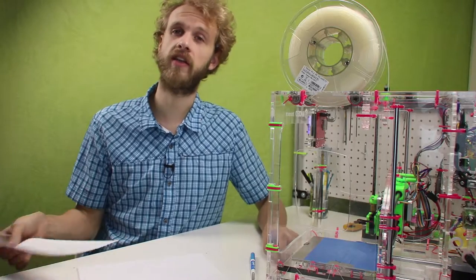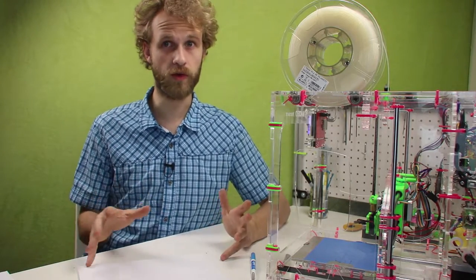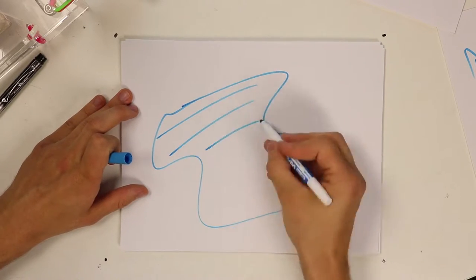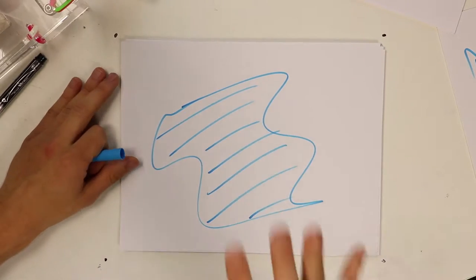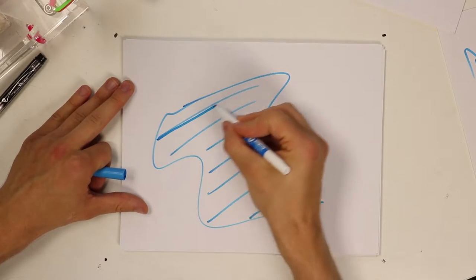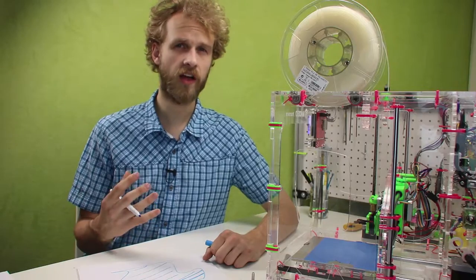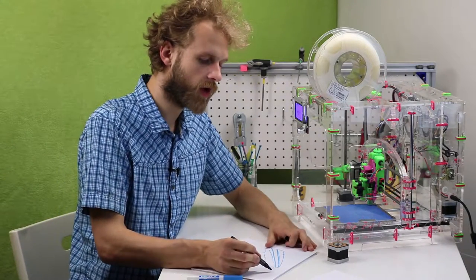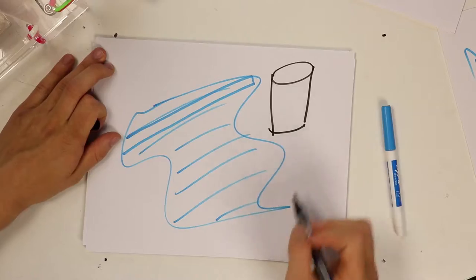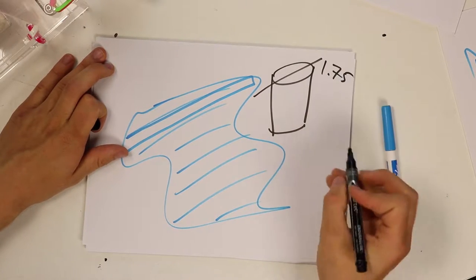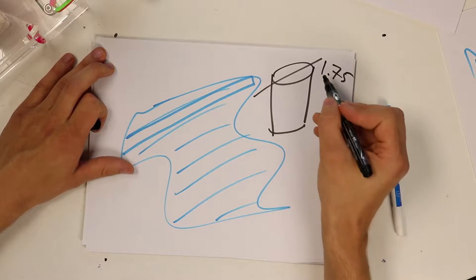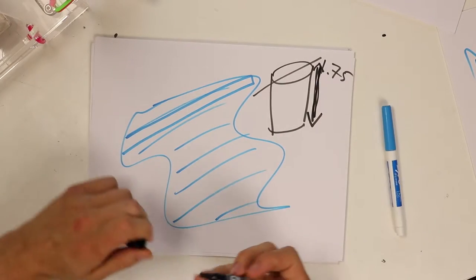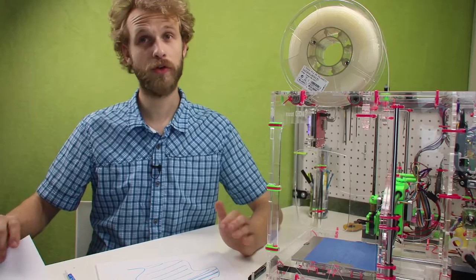Next thing we need to look at is how slicers work or what slicers do at a very basic level. A slicer, of course, slices the object into layers and then divides the layer into lines. It figures out the length of each line it needs to print and then it calculates the volume that the extruder needs to extrude in order to get that line. The slicer does know how to get to the volume of filament extruded because it knows the diameter of the filament. In our case, 1.75 millimeters. So the slicer will tell the printer to extrude a specific length of filament to get the volume that it needs. I'm sure you see the trouble now.